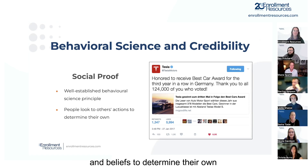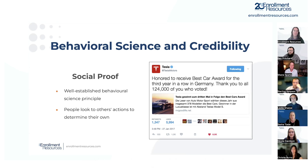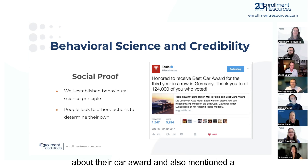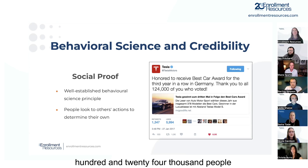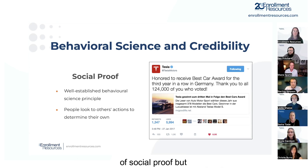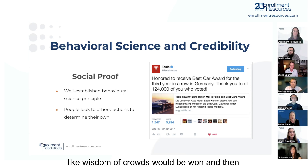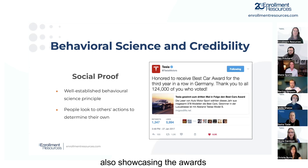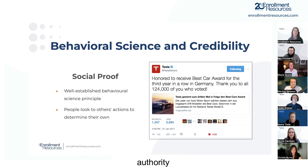Social proof can show up in lots of different ways. For example, Tesla tweeted about their car award and also mentioned 124,000 people voted. They're using a couple of different elements of social proof — wisdom of crowds would be one, and also showcasing awards — to give themselves credibility and authority.